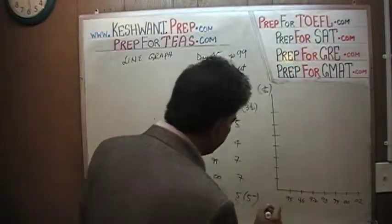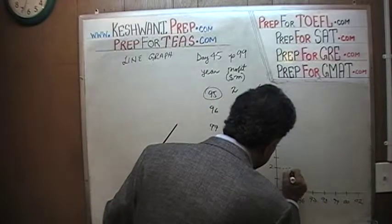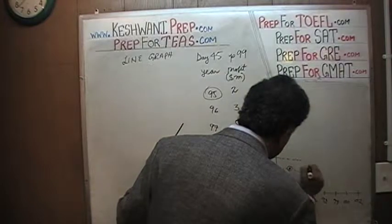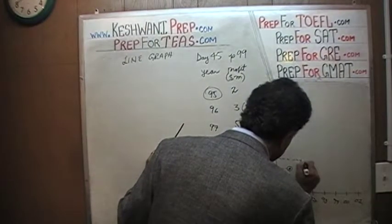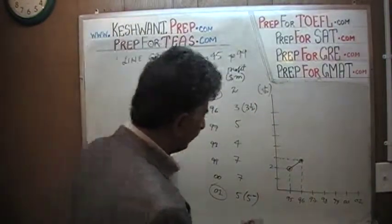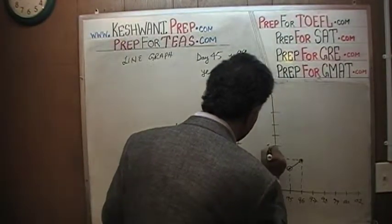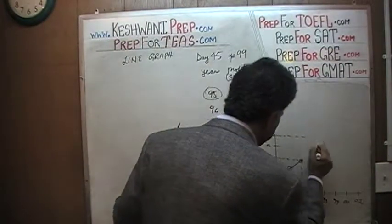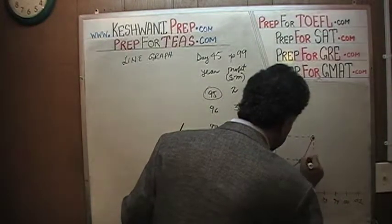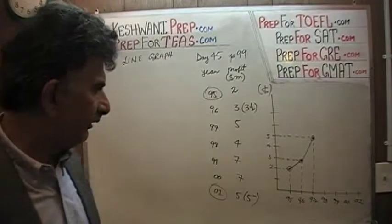In 95, we have 2 million — we plot 2 million right here. In 96, we have 3. Then it goes up to 5 million in 97. We keep joining them, and what will emerge at the end is what is known as the line graph. That's what it is — very simple.